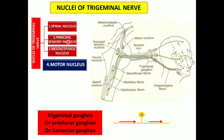The second nucleus is the principal sensory nucleus, located in the pons. It generally receives general sensations from the various territories of the trigeminal nerve — ophthalmic, maxillary, and mandibular.